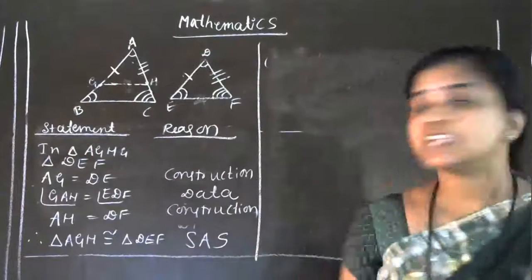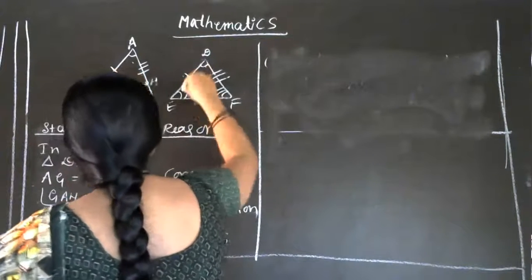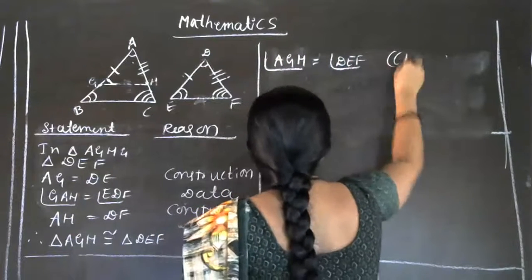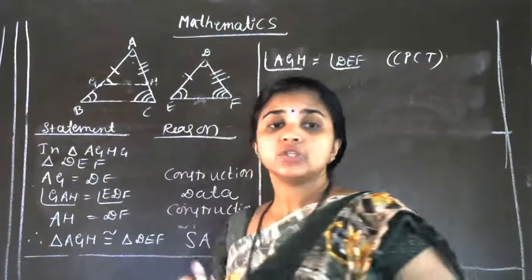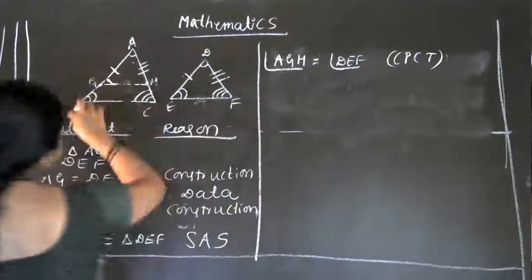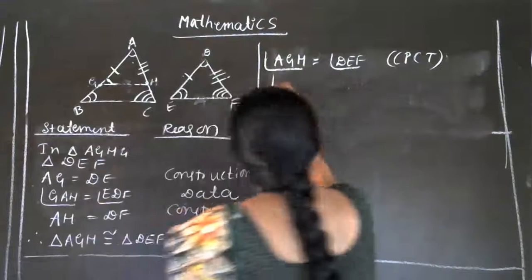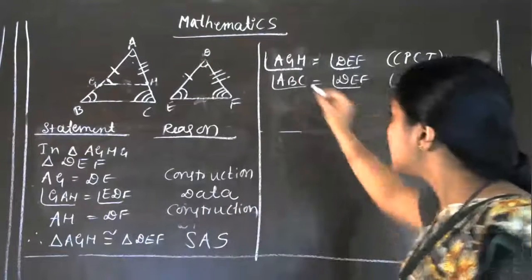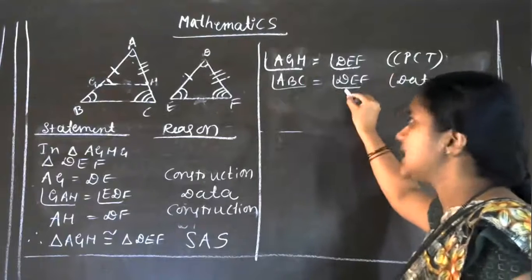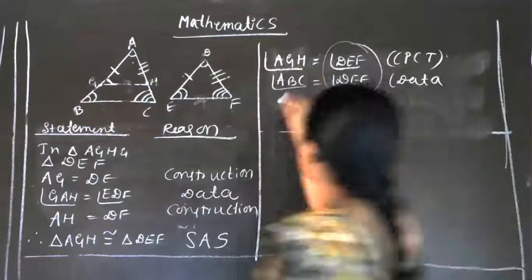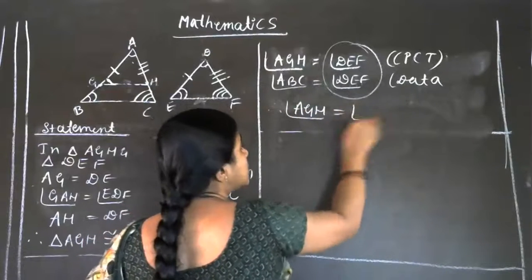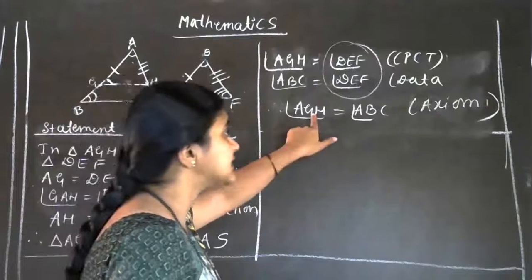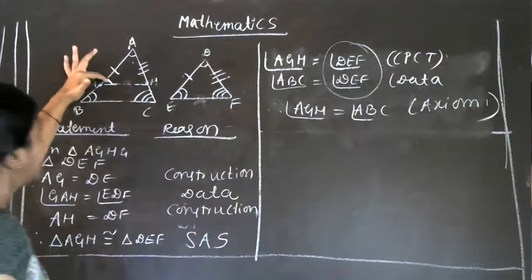We have to take the CPCT. In CPCT, we take angle AGH is equal to angle DEF — that is CPCT. But what we know is angle ABC is equal to angle DEF — that is data. Now, since AGH equals DEF and ABC equals DEF, by Axiom 1, we got the result that AGH is equal to ABC.